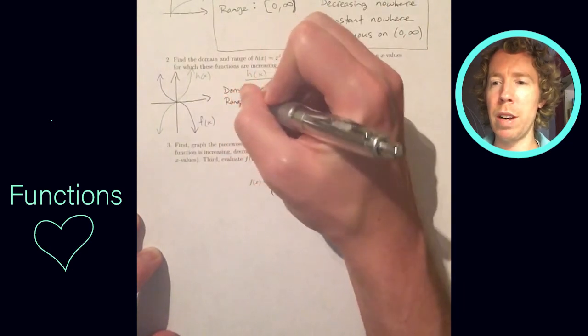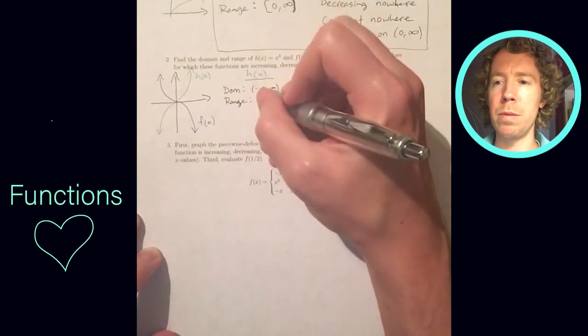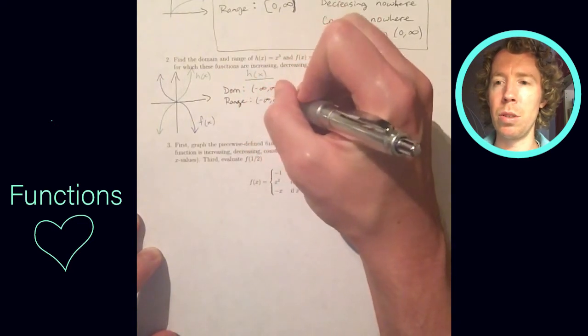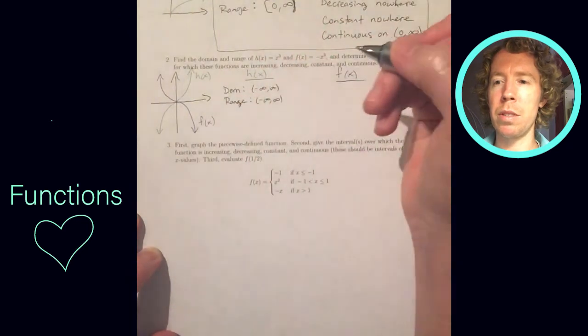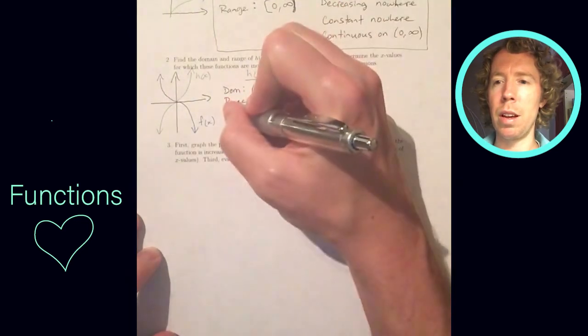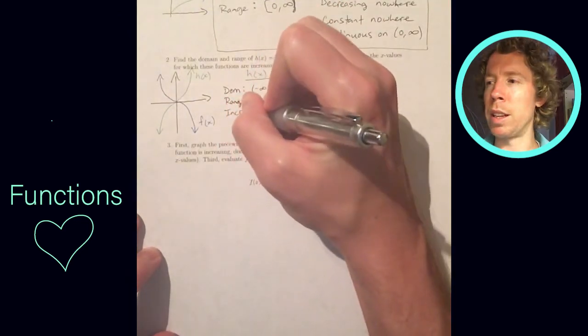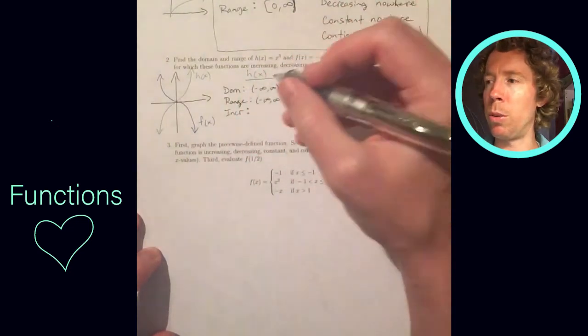So for h of x, that's the original x cubed, I'll answer those questions on the left. And then for f of x, that's negative x cubed, I'll answer those on the right.